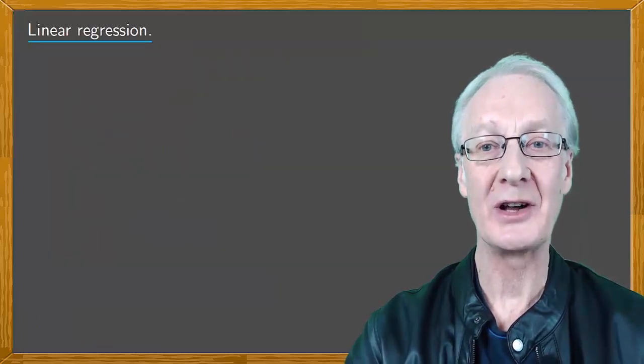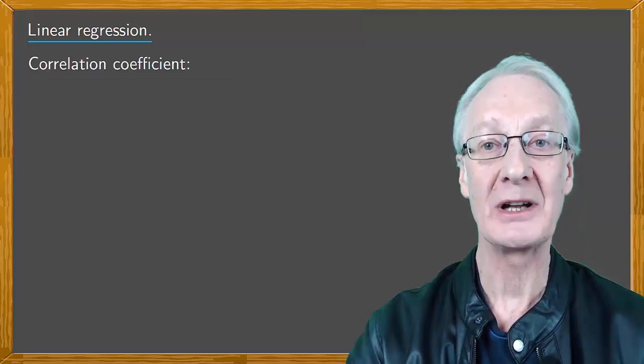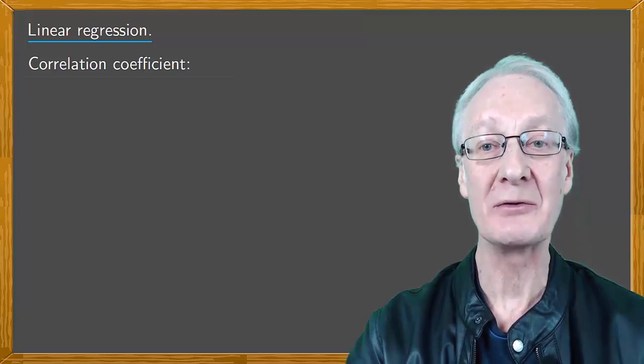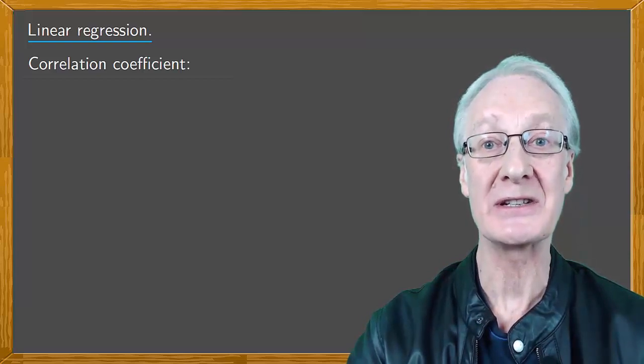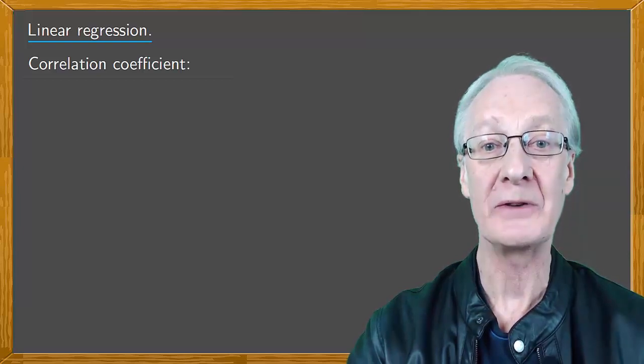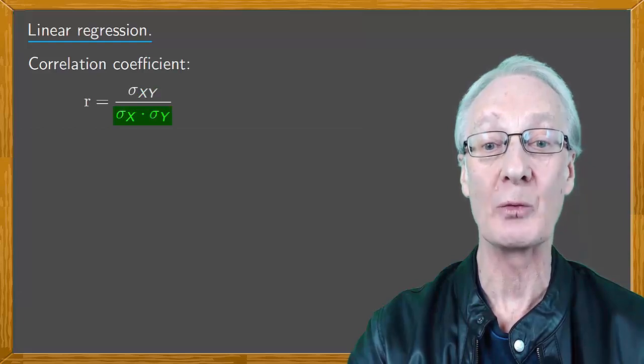Before introducing these lines, we're going to introduce this new parameter, the correlation coefficient, which, like covariance, is a way to see the relationship between these statistical variables. We'll denote the correlation coefficient by the letter R. Its expression is very simple. It's the covariance divided by the products of the typical deviations of X and Y.